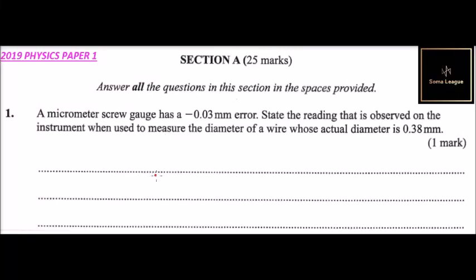This is Section A, which is made up of 25 marks. You are required to answer all the questions in this section in the spaces provided. Question number one: We are told a micrometer screw gauge...